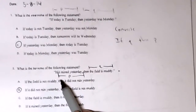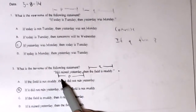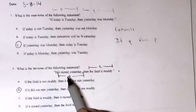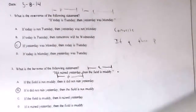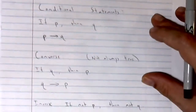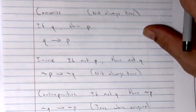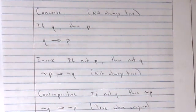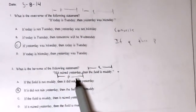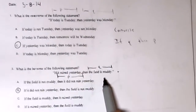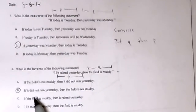The inverse of the following statement: if it rained yesterday, then the field is muddy. The inverse will be if not P, then not Q — so we negate both P and Q. The inverse is: if it did not rain yesterday, then the field is not muddy. Choice B.